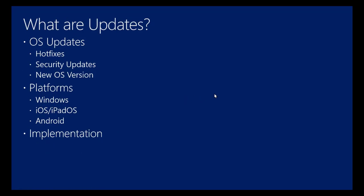What are updates? Updates probably don't need much definition. Basically, updates are updates to the operating system. It could be hotfixes, it could be security updates - that's certainly true for Windows when we release updates once a month. It could be new OS versions, which is what your experience will largely be with iOS and Android, as those devices bundle a lot of updates into their upgrades, including security updates.